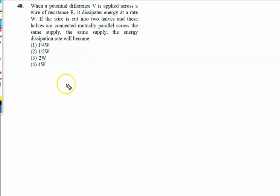When a potential difference V is applied across a wire of resistance R, it dissipates energy at a rate W. The power dissipated P is given by W.